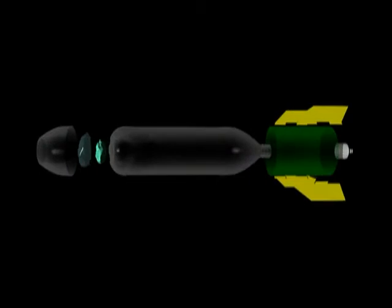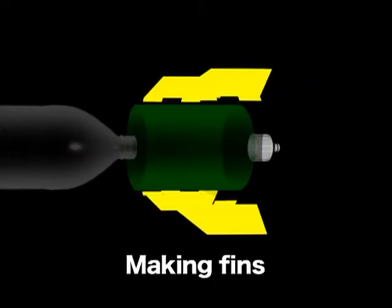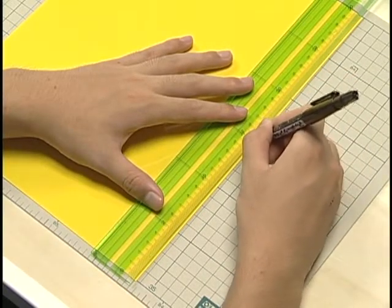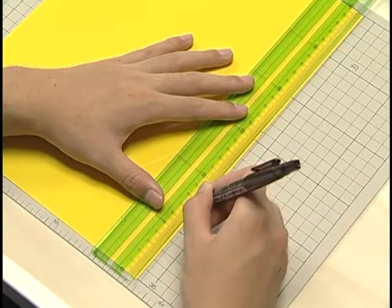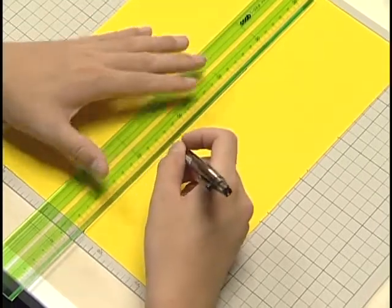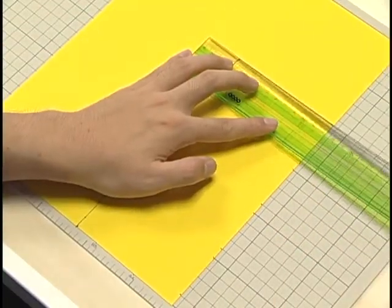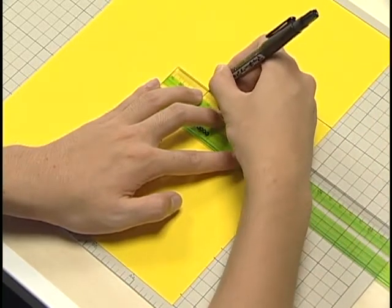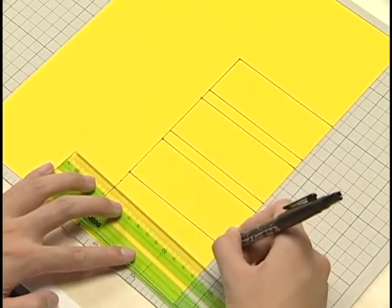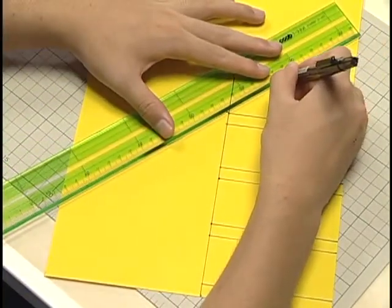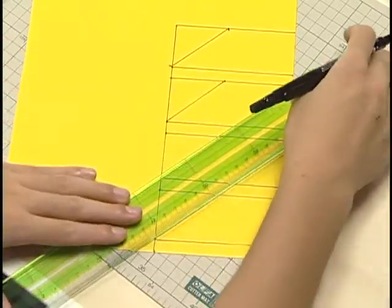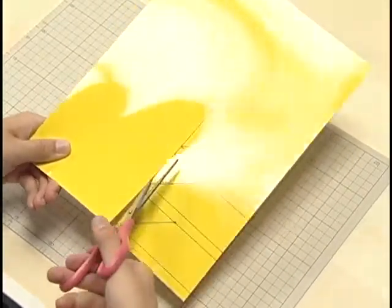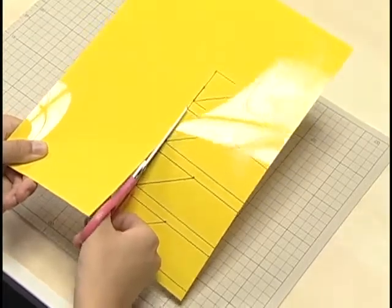Let's now have a look at the water rocket building process. First, measure out the four fins on a PVC sheet. Use a ruler and a magic marker. Next, cut out the fins. You can use a cutter, but a pair of scissors would be safer.